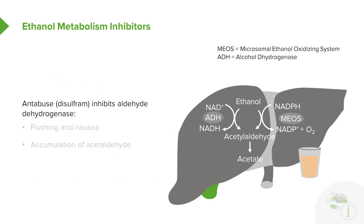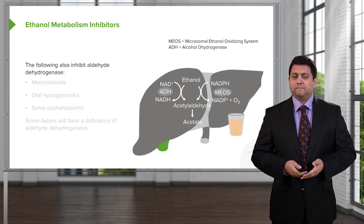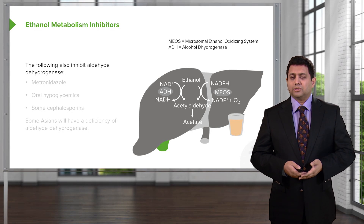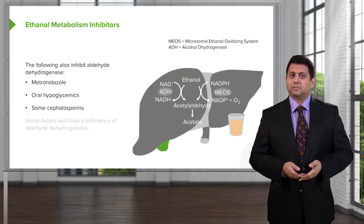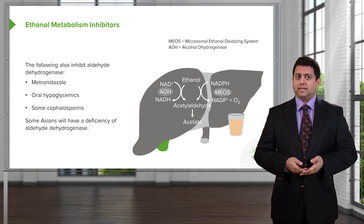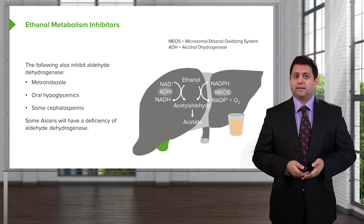Antabuse, or disulfiram, inhibits aldehyde dehydrogenase. What ends up happening is you get accumulation of the byproducts of ethanol — more flushing, nausea, and you accumulate acetaldehyde. One thing you need to know is that aldehyde dehydrogenase can also be inhibited by certain drugs like metronidazole, oral hypoglycemics, and some cephalosporins. And some Asians will have a deficiency of ADH, which makes them more susceptible to ethanol side effects such as flushing and nausea.